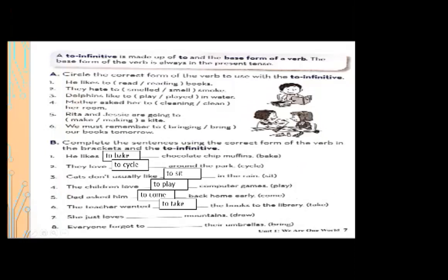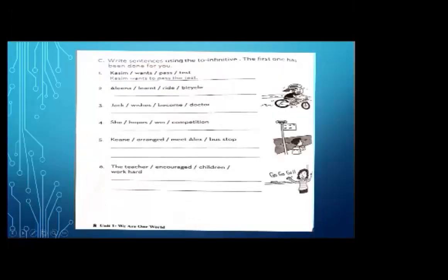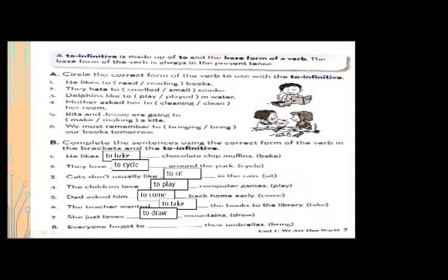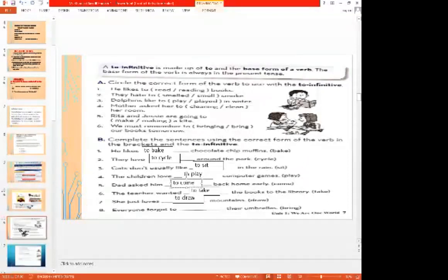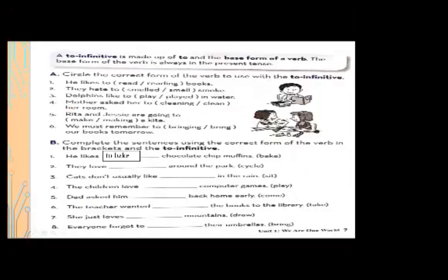Number eight: everyone forgot to — blank — their umbrella. Here 'to' is already written, so we just write the first form of the verb 'bring.' Everyone forgot to bring their umbrellas.